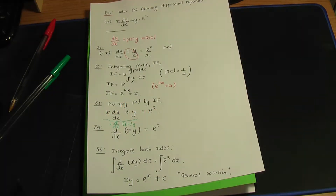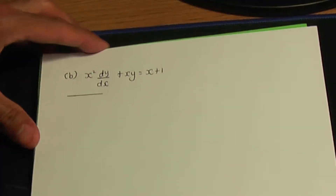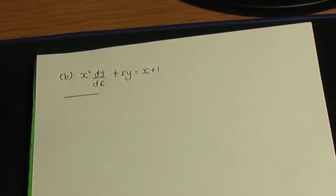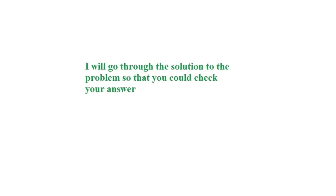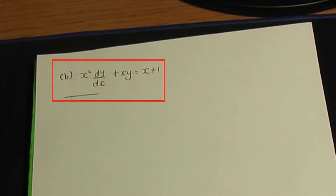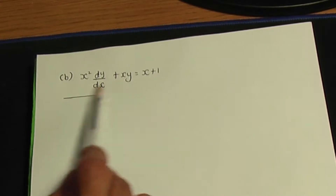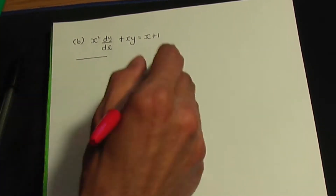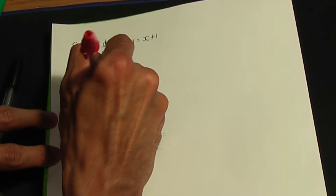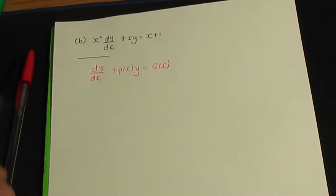I think another example is in order, so let's see these five steps again. Part B is to solve x squared dy over dx plus xy equals x plus 1. Let's first of all rearrange this and investigate what type of differential equation we have. If we can rearrange this in the form dy over dx plus p(x)y equals q(x), we have a first order linear differential equation.